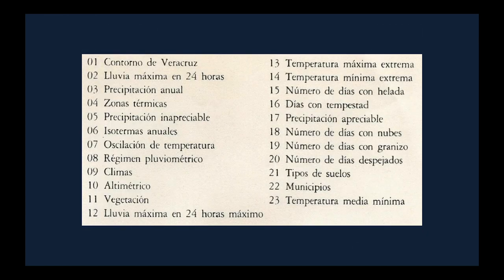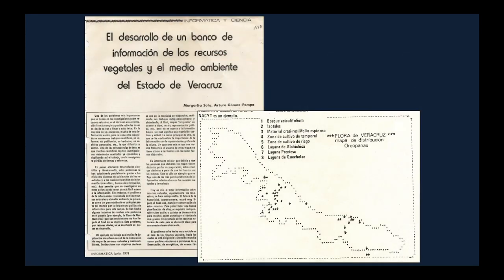Gomez Pompa and his group laid out a list of variables that were physical in nature: climate, precipitation, temperature, elevation, number of days with clouds, number of days with hail, number of clear days, et cetera. We're focused back on the Grinnellian set of variables. Gomez Pompa and especially his fellow researcher Margarita Soto produced a series of very early publications. Their GIS was pretty primitive-looking by our eyes, but essentially they created very simple ecological niche models and predicted distributions of species.